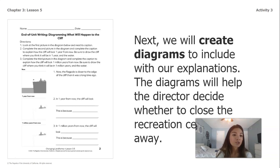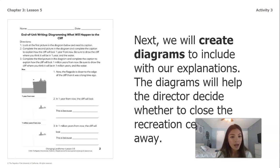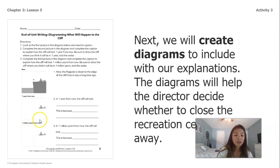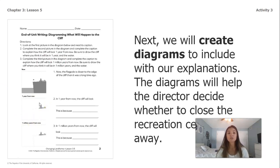Number two says: complete the second picture in the diagram and complete the caption to explain how the cliff will look one year from now. Be sure to draw the cliff where you think it will be in one year and the water. In this box you're going to use what you've learned so far in this chapter about erosion to think about what that cliff might look like in one year.